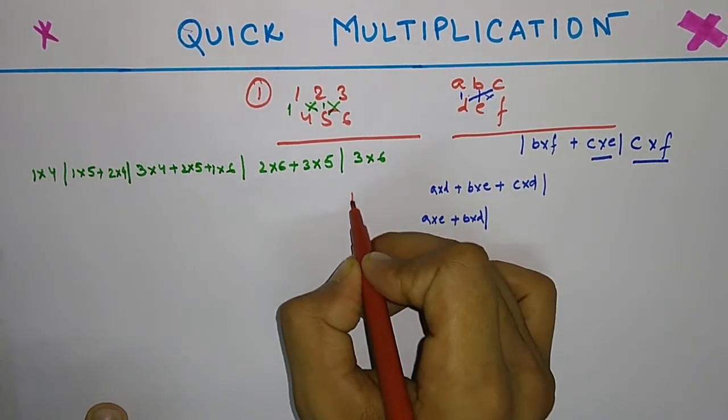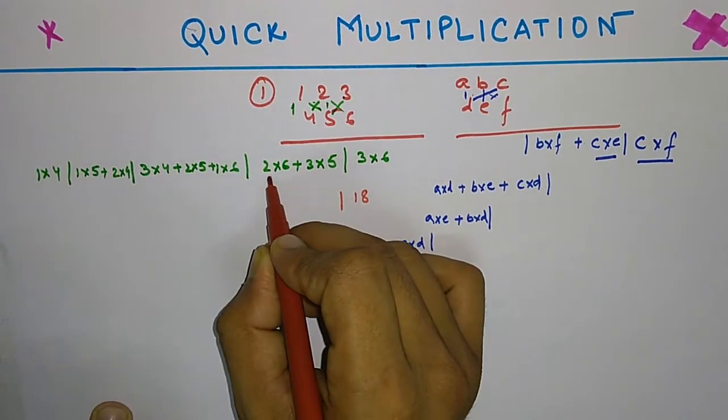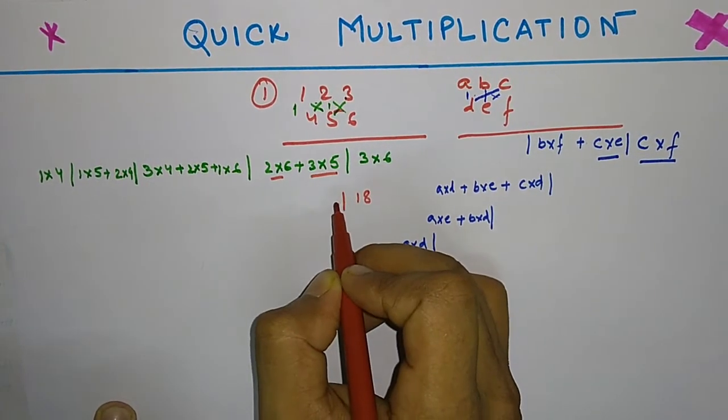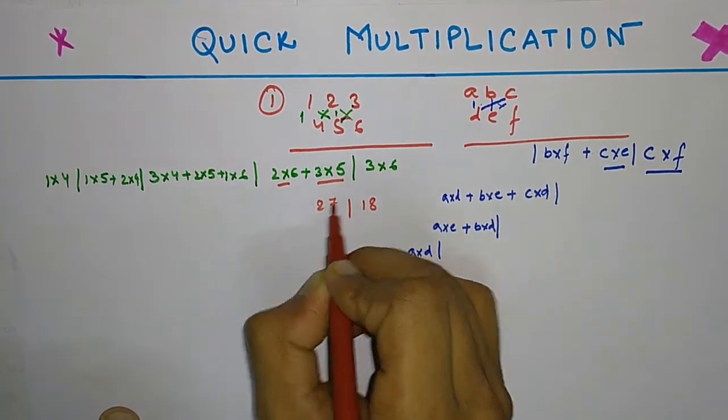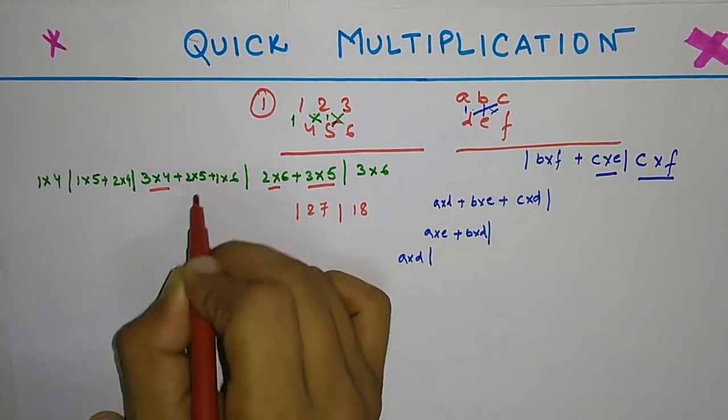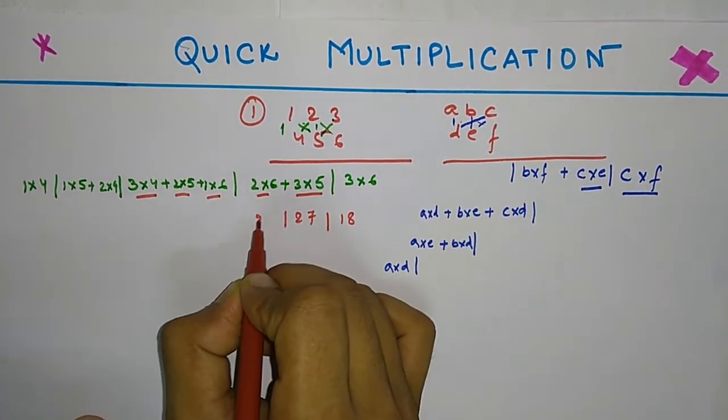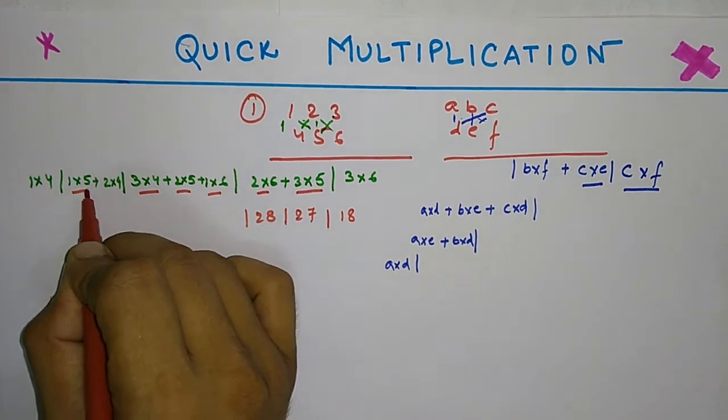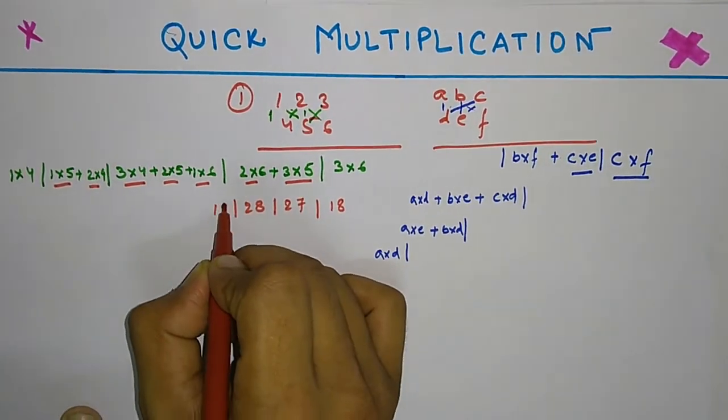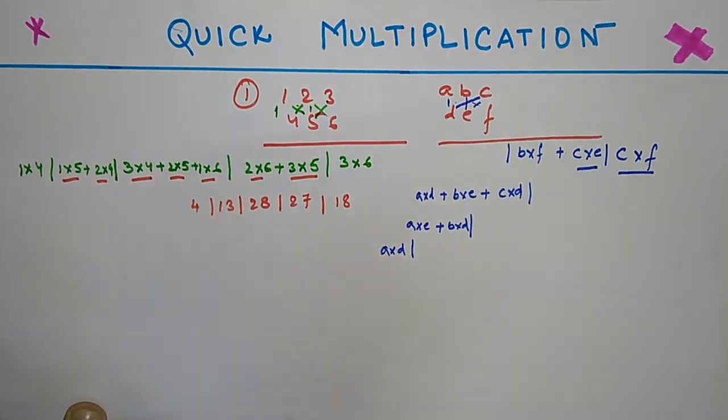For the last one, we are going to multiply these two: that is 1 into 4. So what will be the products of these? 3 times 6 is 18. 2 times 6 is 12 plus 15 is 27. 3 times 4 is 12, 2 times 5 is 10, 22 and 6 is 28. Next we have 5 and 8, that is 13, and 4 ones are 4.